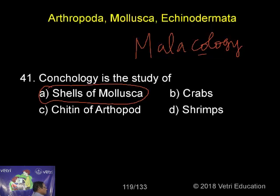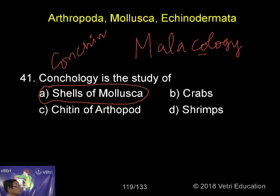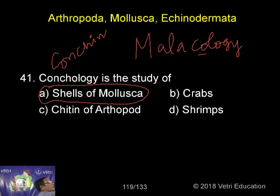Conchology covers the study of mollusks and their shells. The shell is made up of calcium carbonate and an organic substance called conchine. To summarize: the study of mollusk shells is called conchology, while the study of the entire mollusk is called malacology.